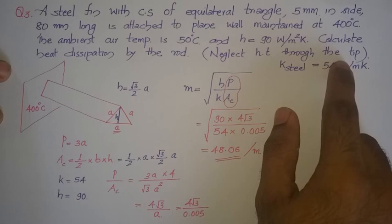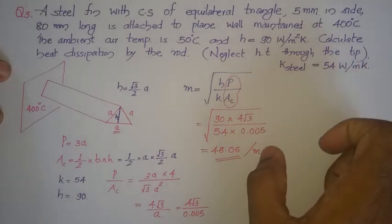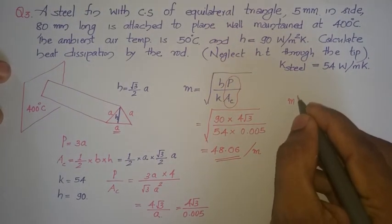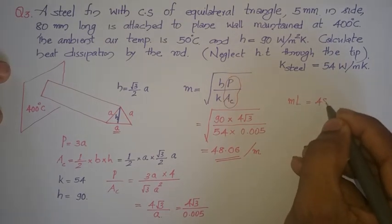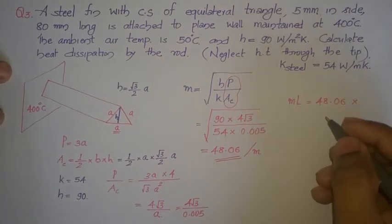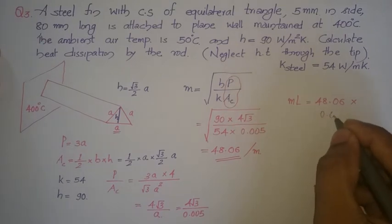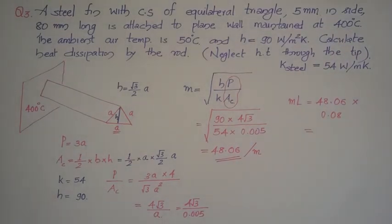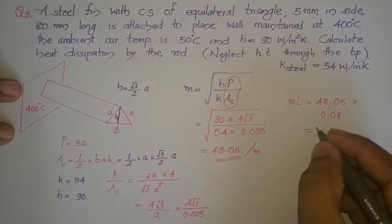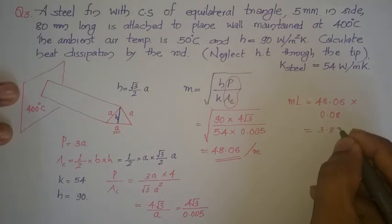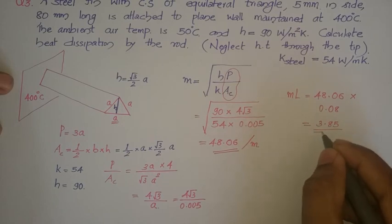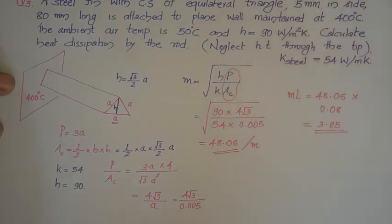It is said to neglect heat transfer through the tip. To determine whether this is a long or short fin, evaluate mL: m is 48.06 and L is 80 mm = 0.08 m, giving mL = 48.06 × 0.08 ≈ 3.85. Since 3.85 is greater than 2.65, this can be considered a long fin.